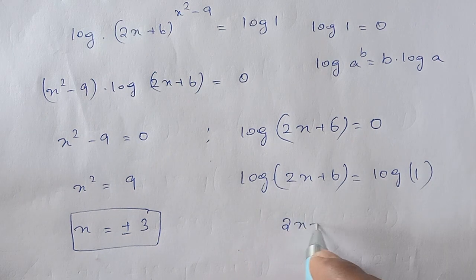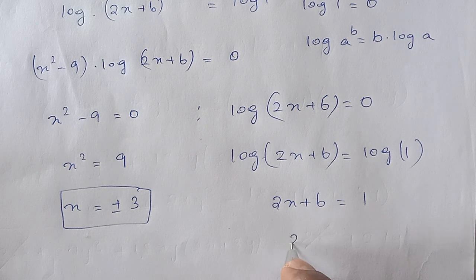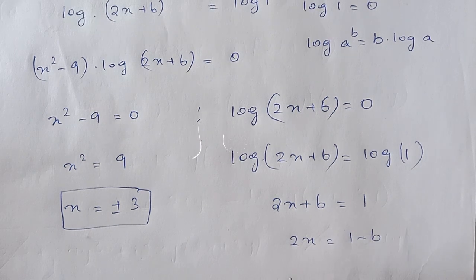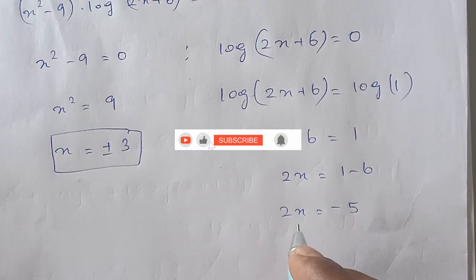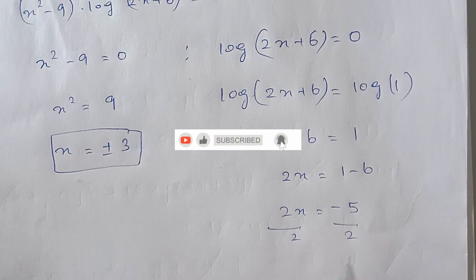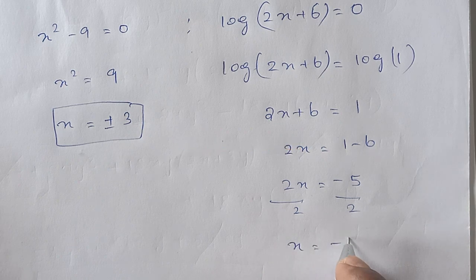Since log is on both sides, we can equate: 2x plus 6 is equal to 1. So 2x is equal to 1 minus 6, which gives 2x equals minus 5. Dividing by 2 on both sides, x is equal to minus 5 by 2.